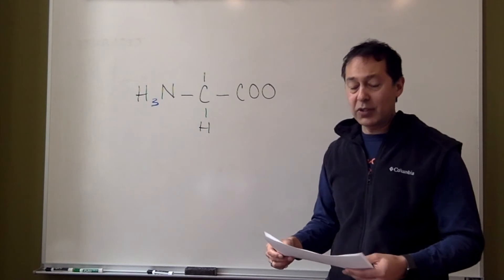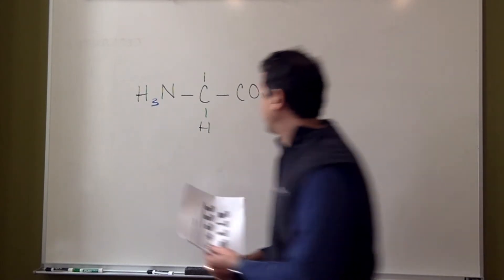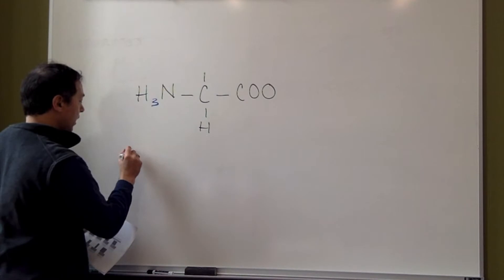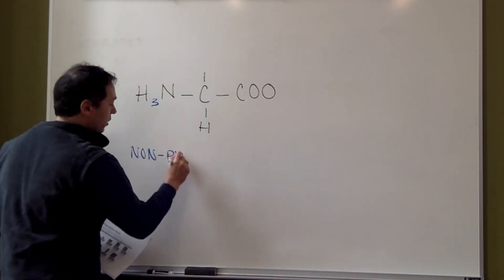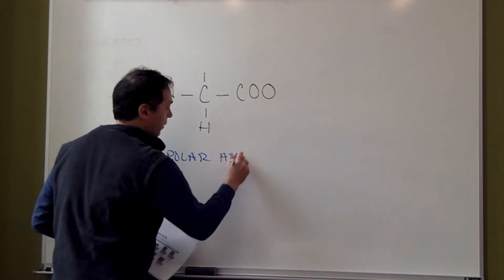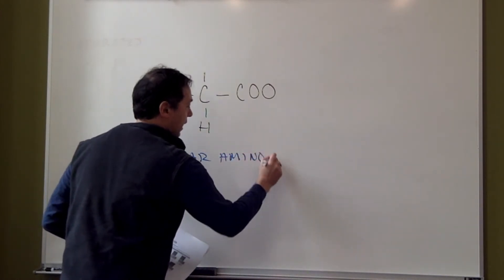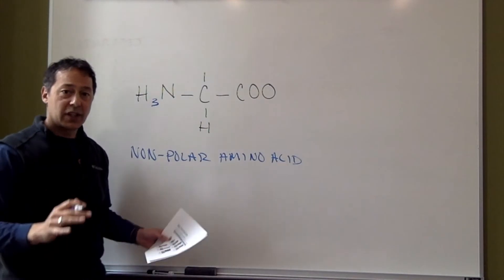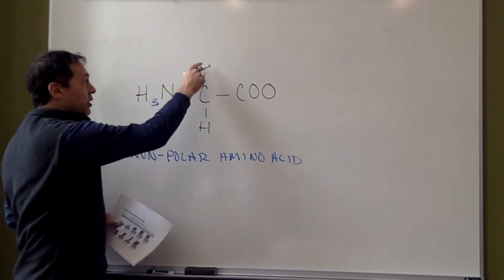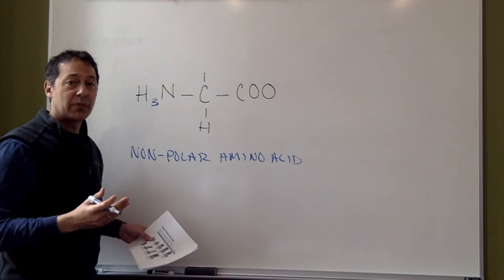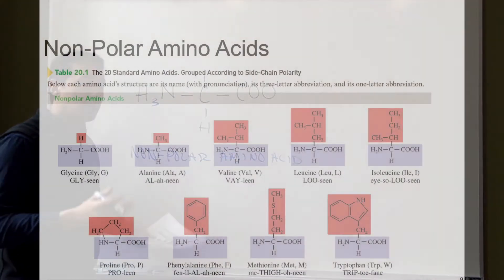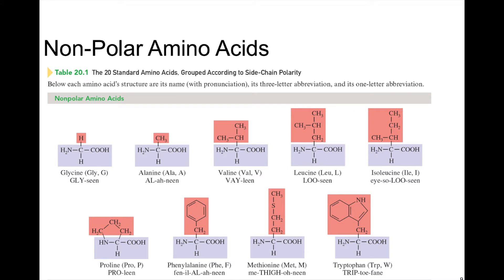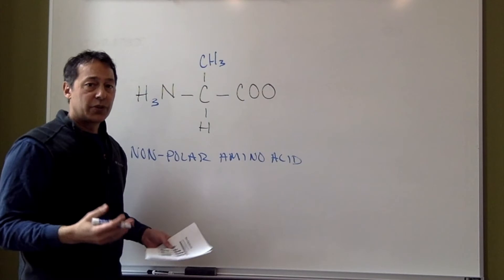Now we're going to start out with what makes an amino acid nonpolar. What makes an amino acid nonpolar is going to be what's attached up here — we need something that's nonpolar attached there. Really what we're looking for is the absence of strongly electronegative elements. So if we have something like a CH3, carbon is not strongly electronegative, and so this would be nonpolar.